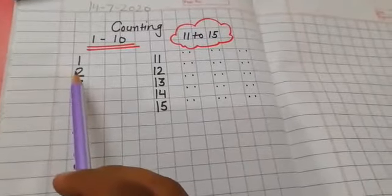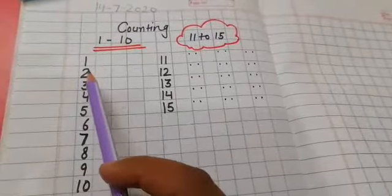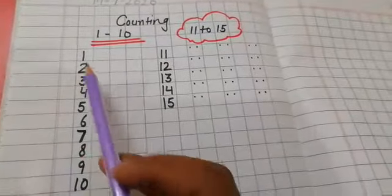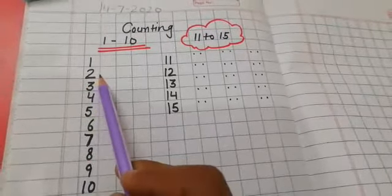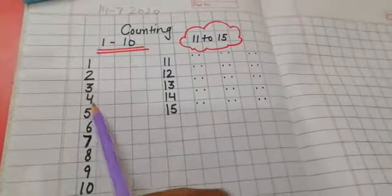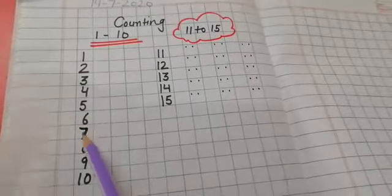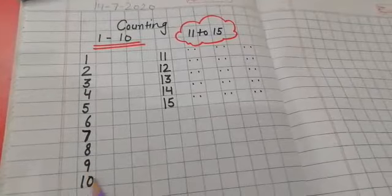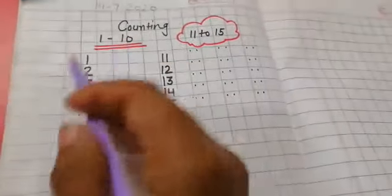Let's start and count and speak with me. 1, 2, 3, 4, 5, 6, 7, 8, 9, 10. Repeat again with me.